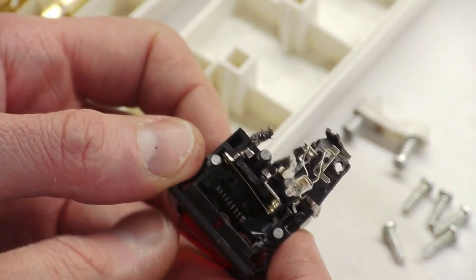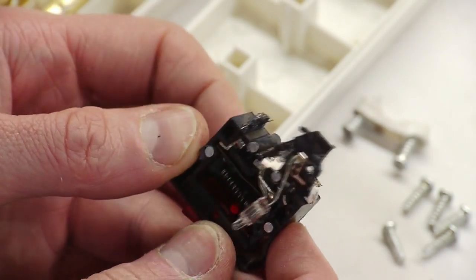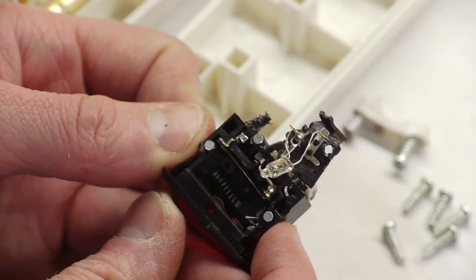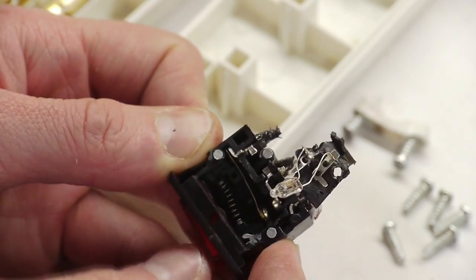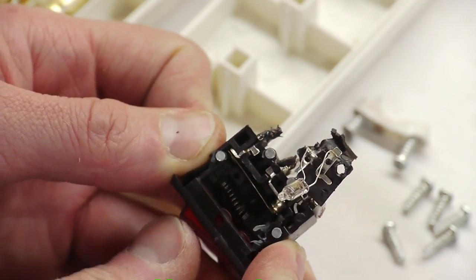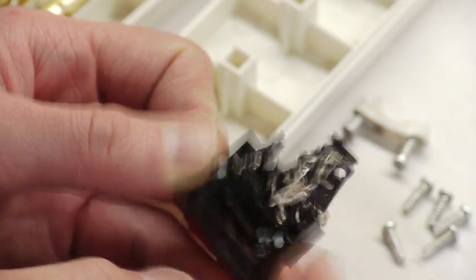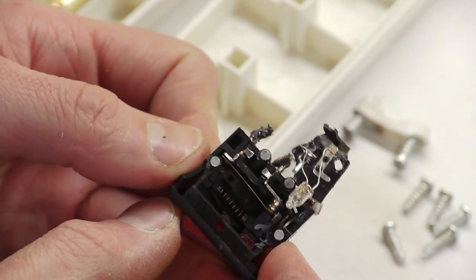The reason that this switch needs a neutral, of course, is for the neon bulb. So the two hot connections are just opened and closed with the switch contact and the neutral just supplies a return path for the current going through the neon bulb.